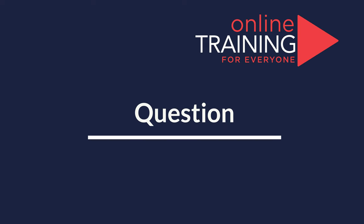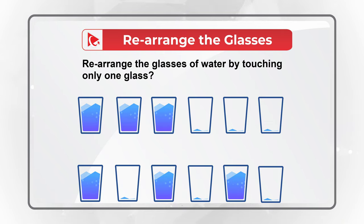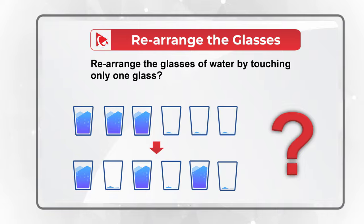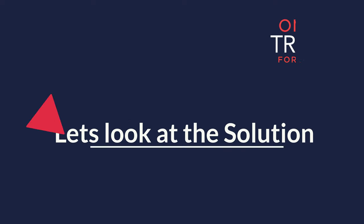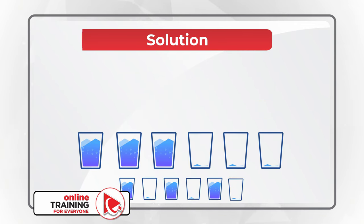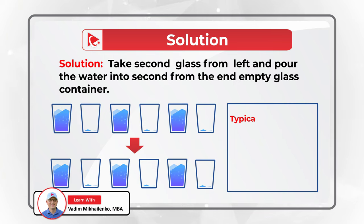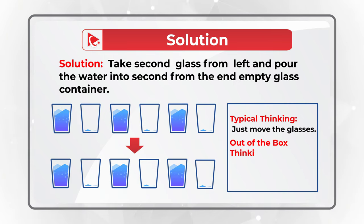I love this amazing question because it tests out-of-the-box thinking. You need to rearrange glasses of water by only touching one glass, getting from the top configuration to the bottom configuration. The solution is to take the second glass from the left and pour the water into the second-from-the-end empty glass container. Typical thinking is to just move the glasses, but out-of-the-box thinking is to pour the water from one glass to another.